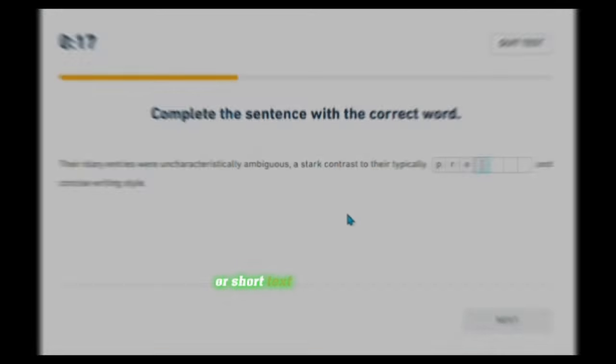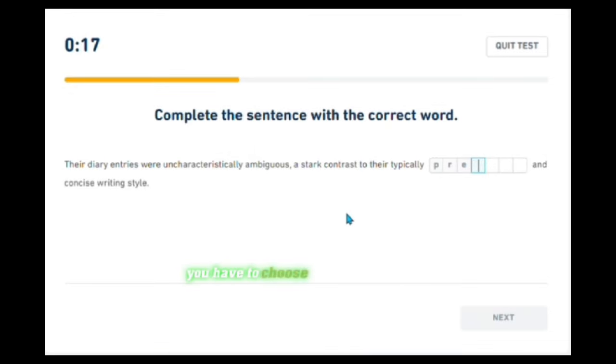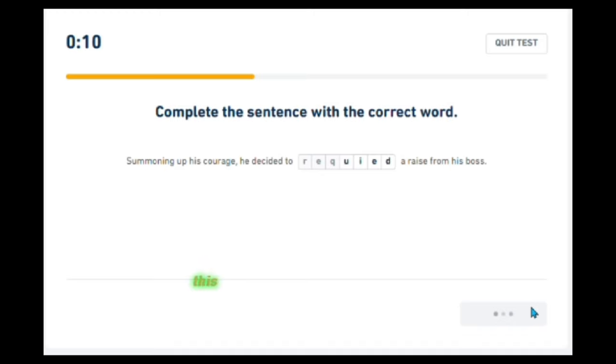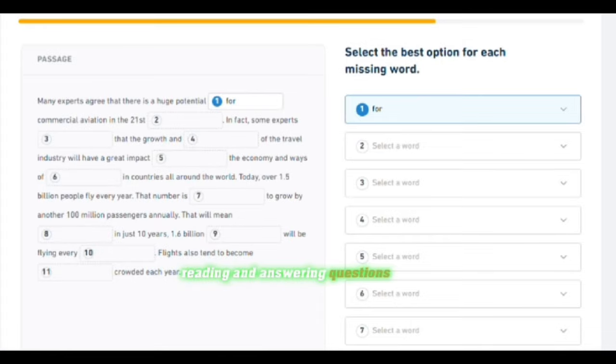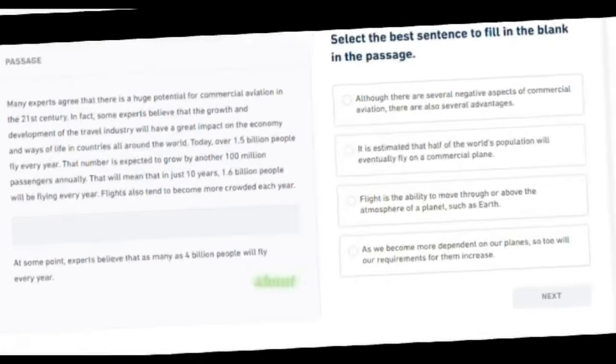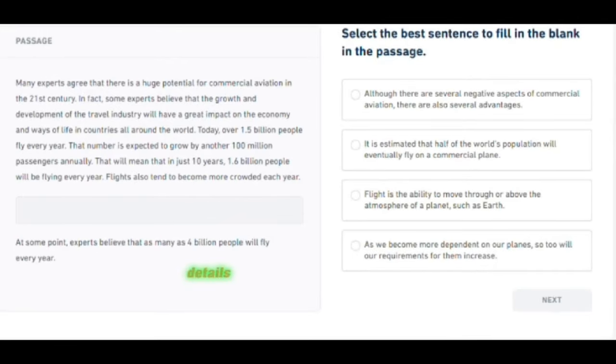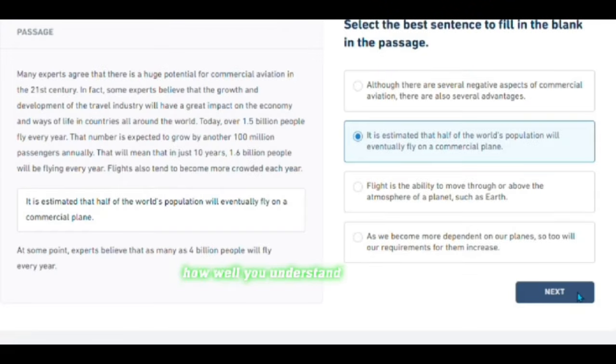Completing missing words: in some questions there will be a sentence or short text with a word missing. You have to choose the right word to fill in the blank. This checks your knowledge of grammar and how sentences are made. For longer texts, you will read and then answer multiple-choice questions about the main idea, details, or the meaning of certain words or phrases. This checks how well you understand not only the main message but also the deeper meaning of what you read.